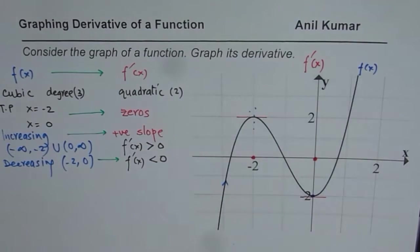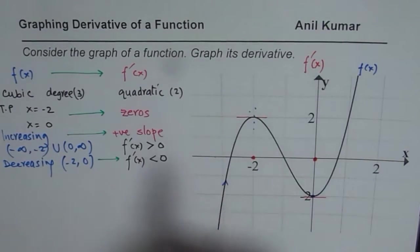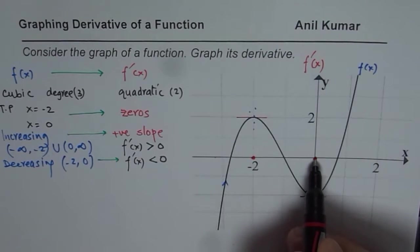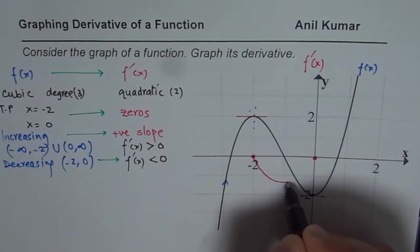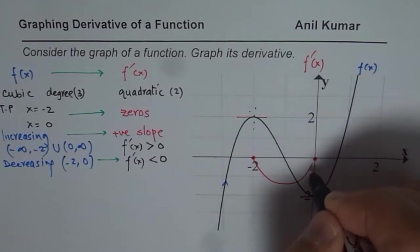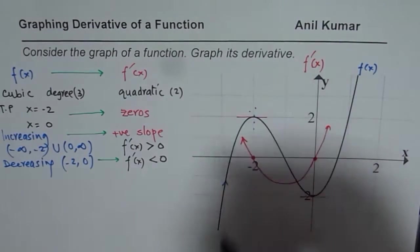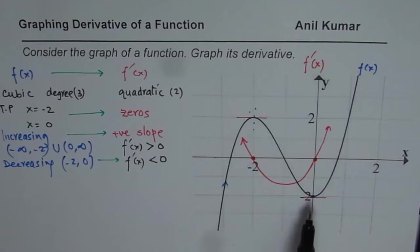So combining all this information, what do we get? We get that on the left side of minus 2, parabola, which is quadratic 2, should be positive. Between minus 2 and 0, it should be negative, and thereafter, it should be positive. So what we can do is we can just combine it like this. So this portion is negative, and then it is positive. Is that okay? So that represents the parabola, which is the derivative of the given cubic function.